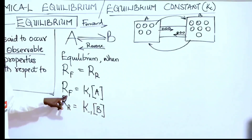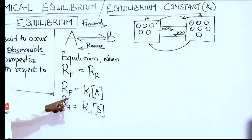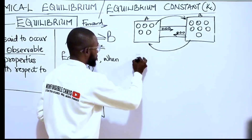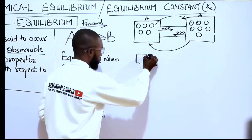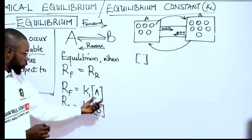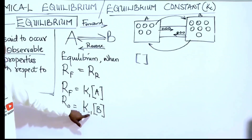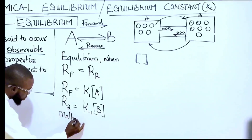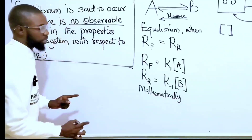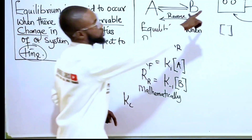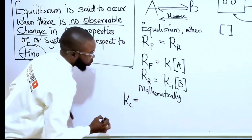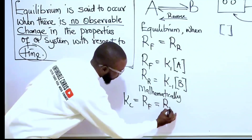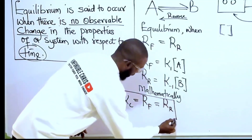The formula for the rate of forward reaction is K1 times the concentration of A, and the rate of reverse reaction is K-1 times the concentration of B. Square brackets denote concentration at equilibrium. In equilibrium, the rate of forward reaction K1[A] equals K-1[B]. Mathematically, if we divide both sides, we get K1 over K-1 equals concentration of B over concentration of A. That gives us the equilibrium constant Kc.